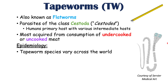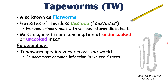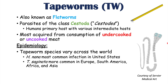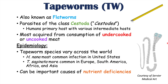Tapeworm species vary across the world, with some species being more common in certain areas than others. For instance, Hymenolepis nana is the most common infection in the United States, whereas Taenia saginata is more common in Europe, South America, Africa, and Asia. Tapeworms can also be important causes of nutrient deficiencies, which we will talk about later in this lesson.